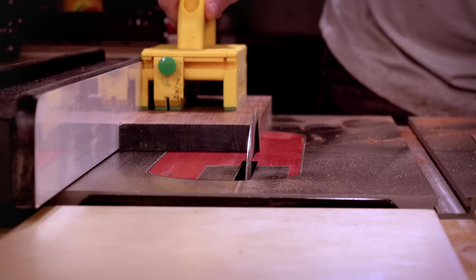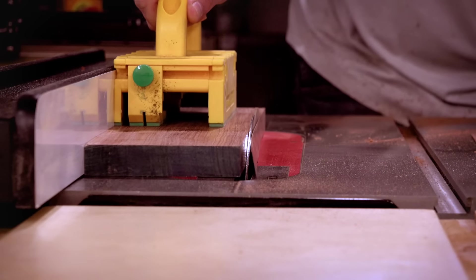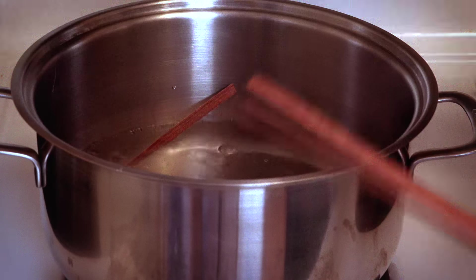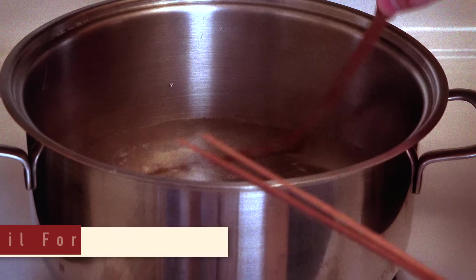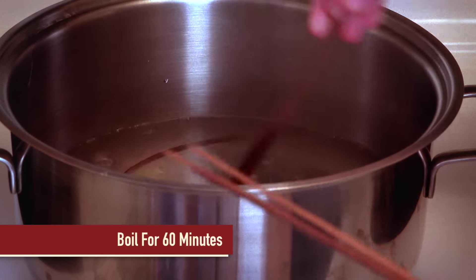If you don't have access to veneer, you can easily cut your own on the table saw. Now, you'll need to boil the veneer in water for 60 minutes. This will make it extremely pliable.